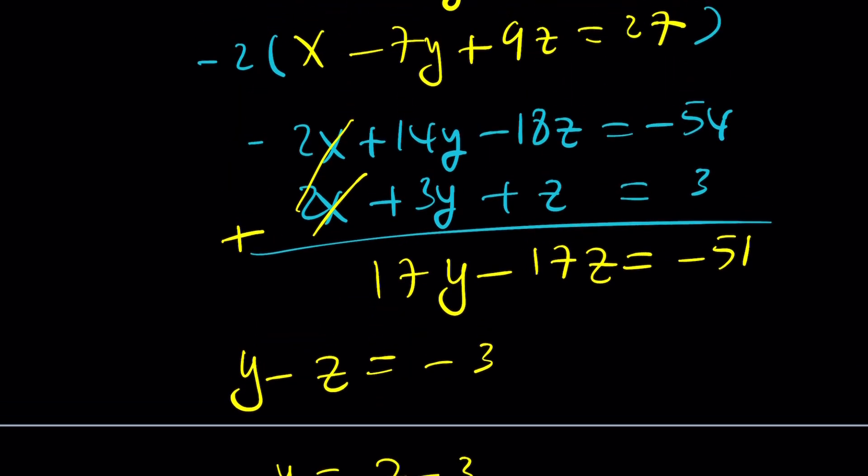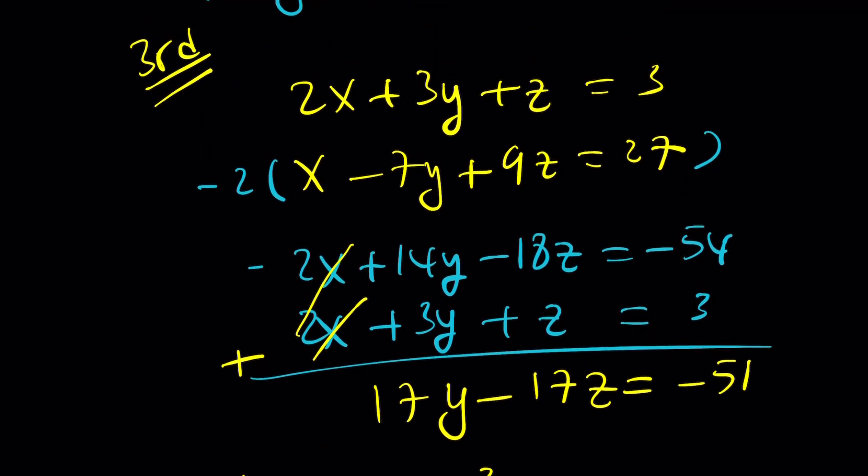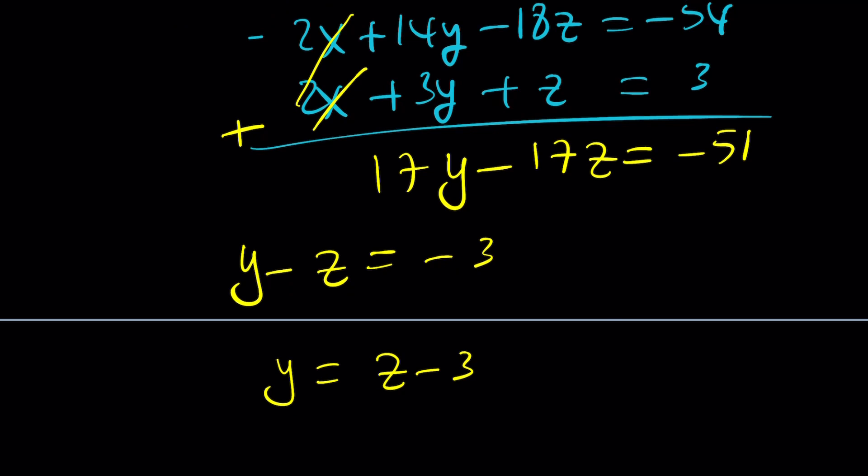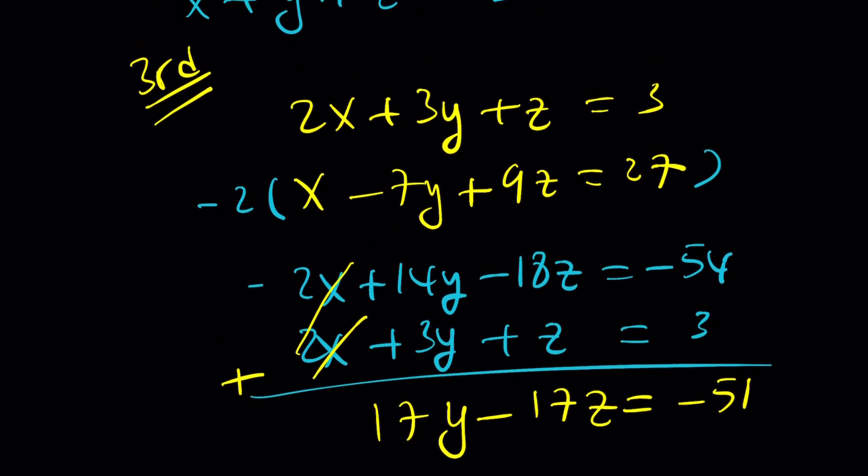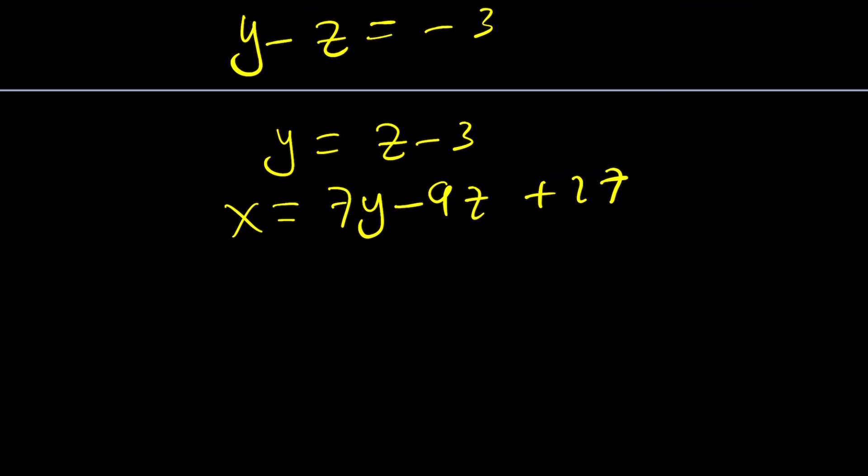x, I don't know what it is. And we have the equation. So what can I do with this? Well, first of all, I have something for y in terms of z. What would happen if I try to isolate x from one of these equations? Probably the second one. I can kind of isolate it and write it as 7y minus 9z plus 27. And since y is equal to z minus 3, let's go ahead and replace y with z minus 3 here. And we're going to get x equals 7z minus 21 minus 9z plus 27. And this is going to give us x equals negative 2z plus 6.